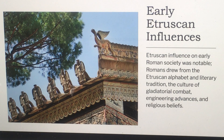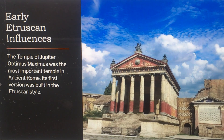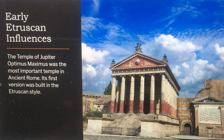Romans drew from the Etruscan alphabet and literary tradition. The culture of gladiatorial combat came from the Etruscans, along with engineering advances and religious beliefs. The Temple of Jupiter Optimus Maximus was the most important temple in ancient Rome, and its first version was built in the Etruscan style.